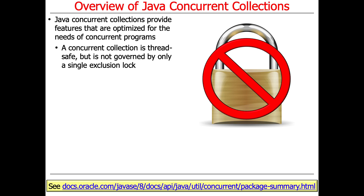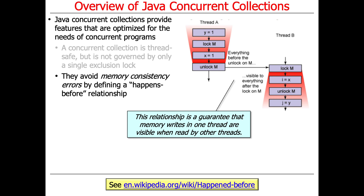The main reason why these are a win is that they're not governed by just one lock. Concurrent collections like concurrent hash map are more cleverly designed to have multiple locks, and therefore there's a finer level of granularity of locking, so there's less overhead in many cases. They also provide good support to avoid memory consistency errors by ensuring so-called happens-before relationships. We'll talk more about happens-before relationships later.